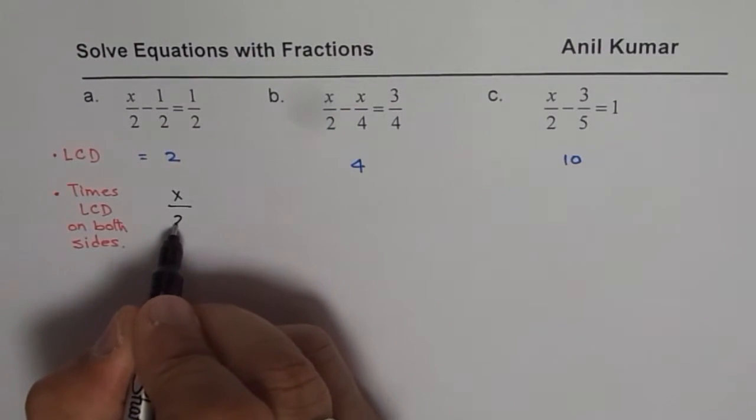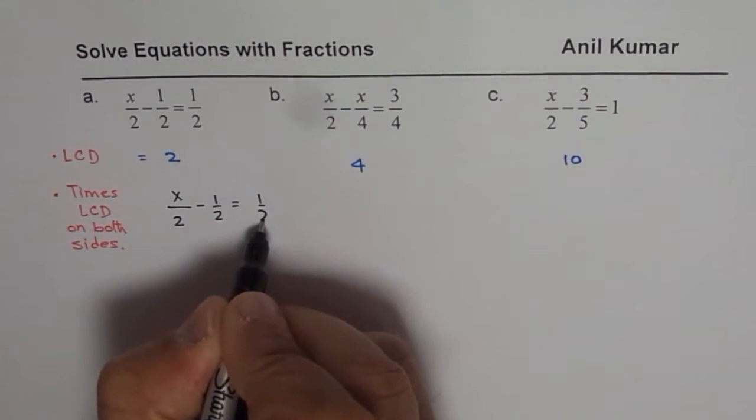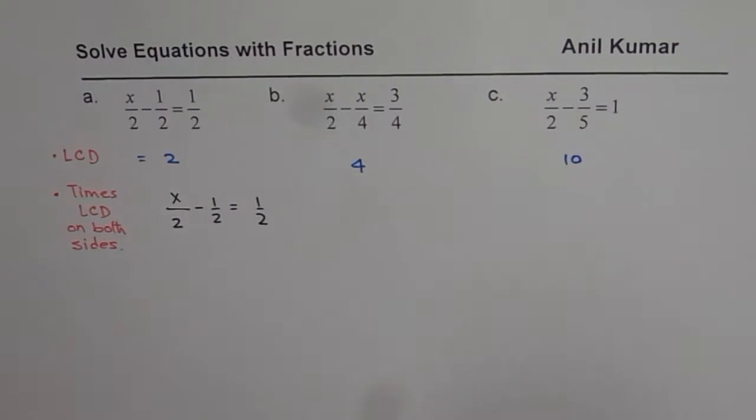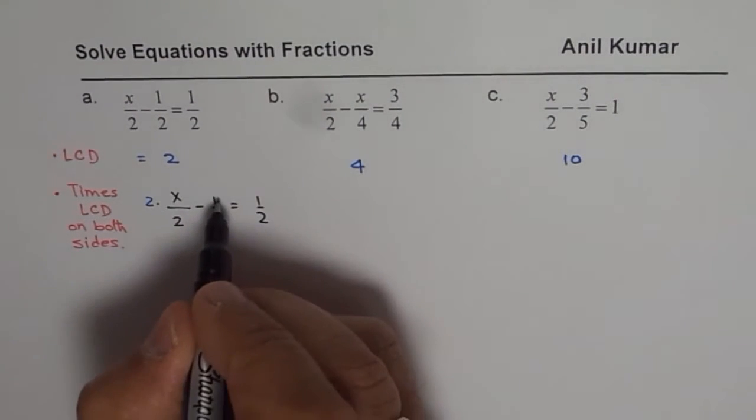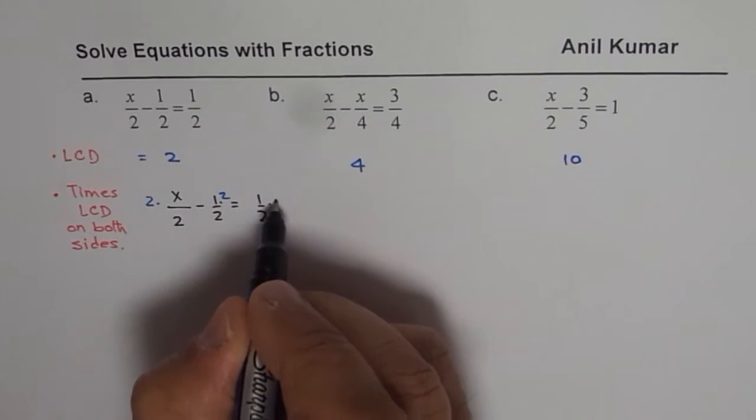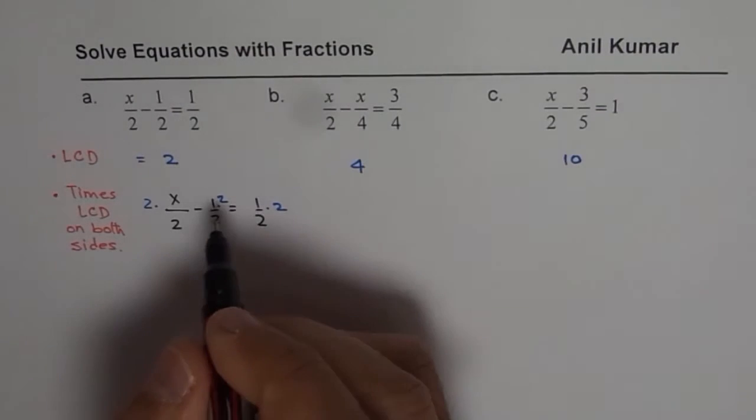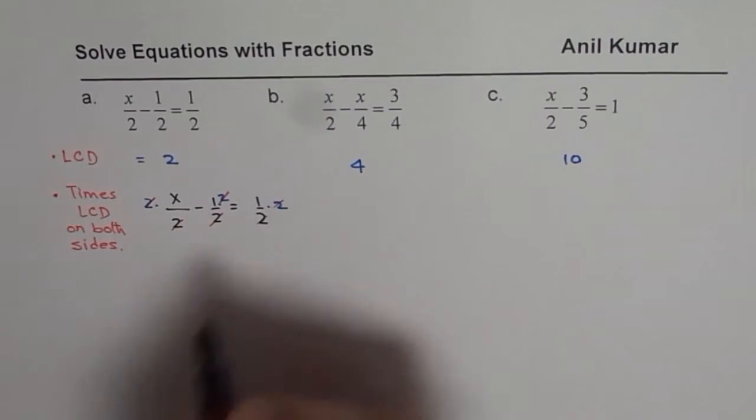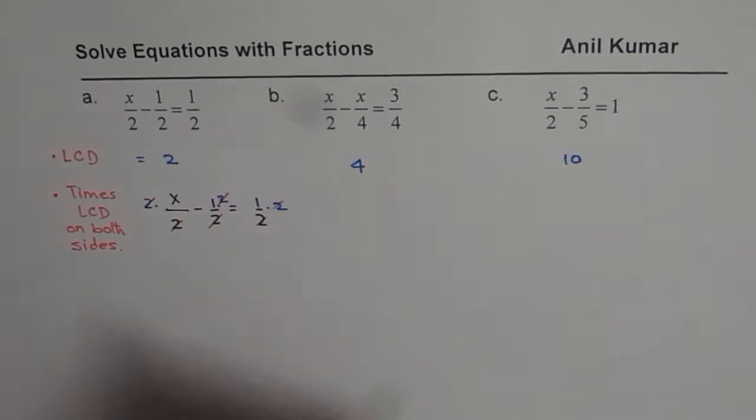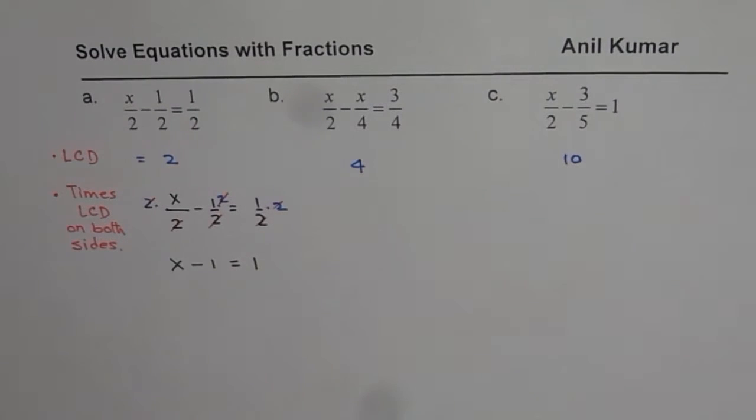In this case, it is x over 2 minus half equals to half. So we know that least common denominator is 2. So multiply each term by 2. Multiply each term by 2. So once you do that, you can actually simplify it. So what happens is that 2 gets cancelled here. 2 divided by 2 is 1. So now the equation which you get is x minus 1 equals 1.